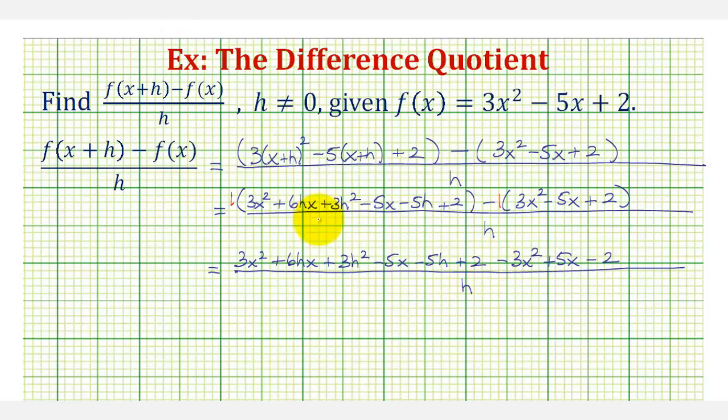Now looking at the numerator, we have three x squared minus three x squared, that's zero. We also have negative five x plus five x, that's zero. And we have plus two minus two, that's zero. So we're left with six hx plus three h squared, and then minus five h divided by h.